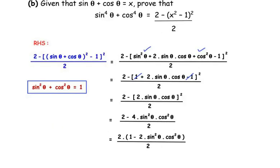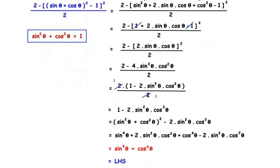Further simplifying, squaring the bracket gives 4 sin²θ cos²θ, so we have 2 minus 4 sin²θ cos²θ all over 2. Taking 2 as a common factor from the numerator gives 2(1 − 2 sin²θ cos²θ) / 2, and cancelling the 2 leaves us with 1 − 2 sin²θ cos²θ.